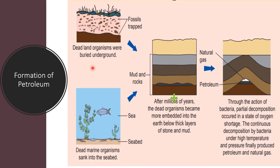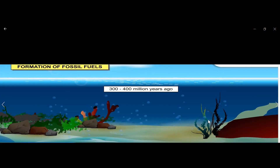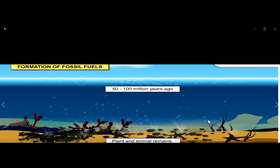Next, let's look at the formation of petroleum. Dead land organisms were buried underground, and dead marine organisms sank into the seabed. Millions of years ago, plants and animals died. After millions of years, the dead organisms became more embedded into the earth below thick layers of stone and mud.